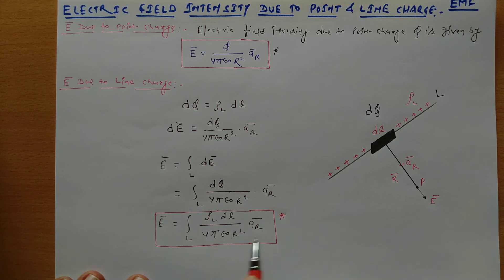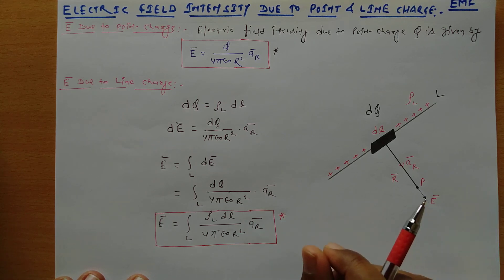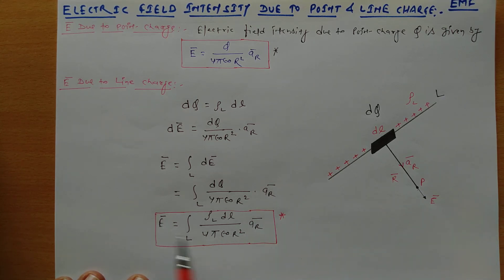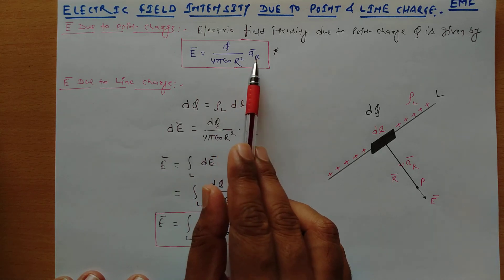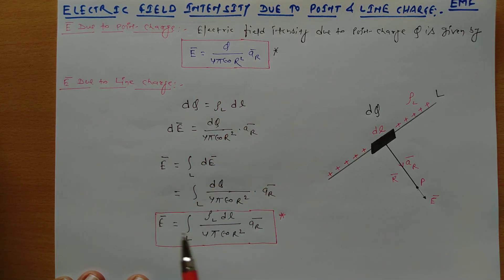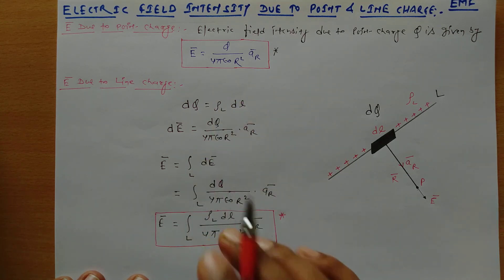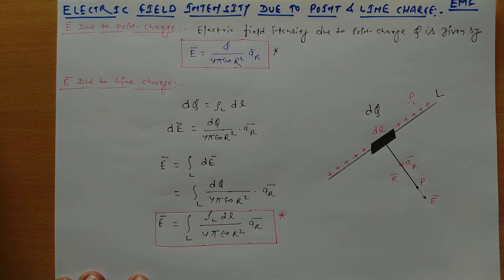I will explain all of these things in the numericals. Just remember these two very important expressions: the electric field intensity due to the point charge, and the electric field intensity due to the line charge. These two expressions will be used for the numericals. In the next video I will tell you about the electric field intensity due to a surface charge or a volume charge distribution. Thank you.